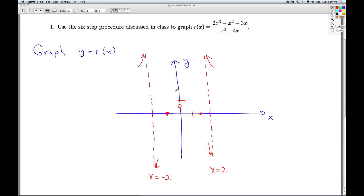From the end behavior analysis, y equals 2 is the horizontal asymptote. And as we went off to positive infinity, we were a little bit under that. And as we went to negative infinity, we were a little bit above that.